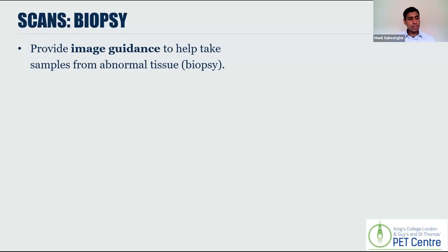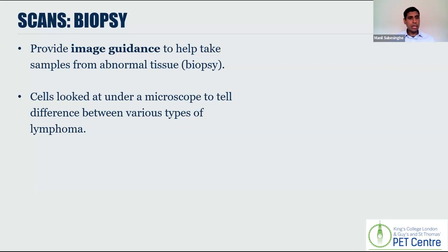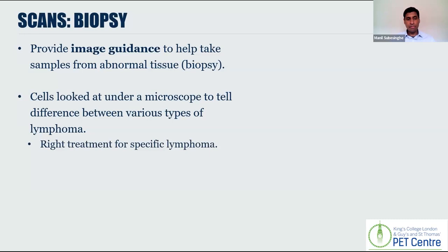This leads on nicely to the next major role of scans: providing imaging guidance to help us take samples from abnormal tissue, known as a biopsy. These samples of tissue are sent to the labs so that the cells can be looked at under a microscope by doctors called histopathologists. Their primary role is to tell the difference between normal and abnormal cells and determine whether we are dealing with a lymphoma, and if so, what type — because different types of lymphoma have different treatments.